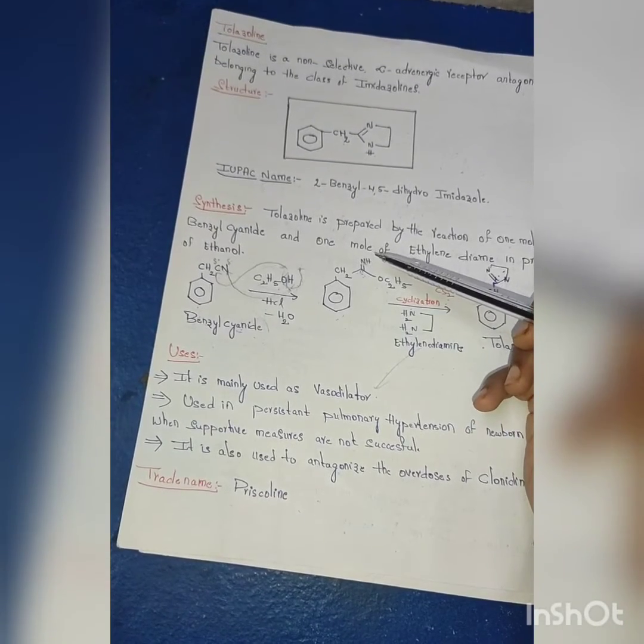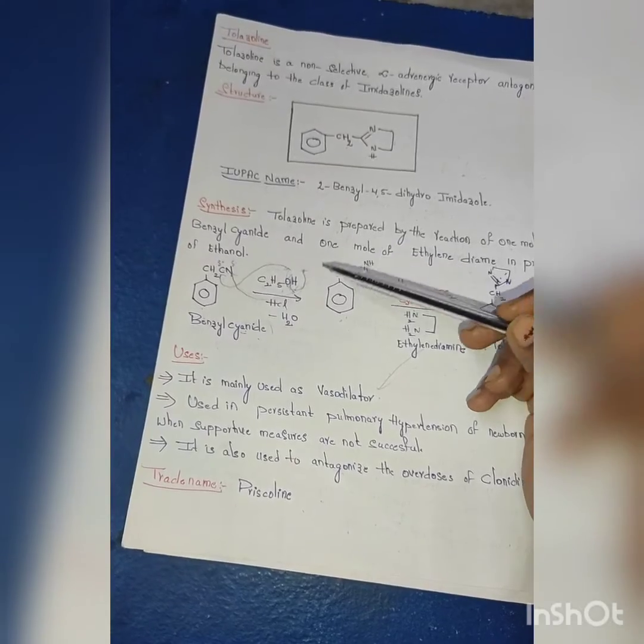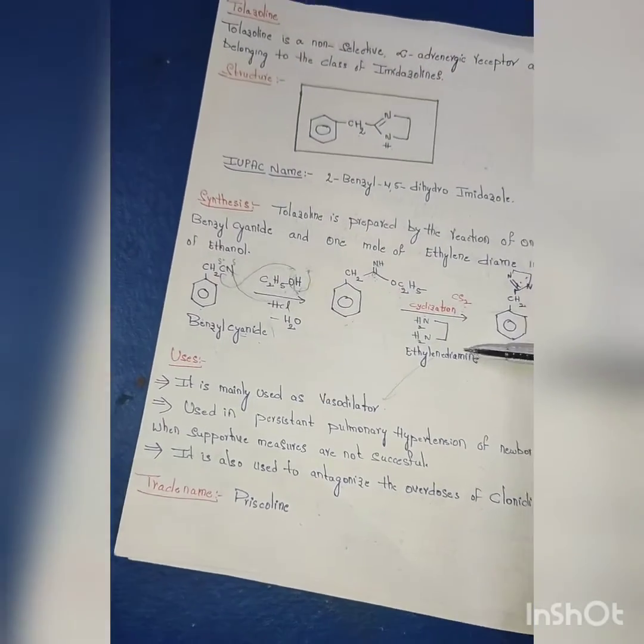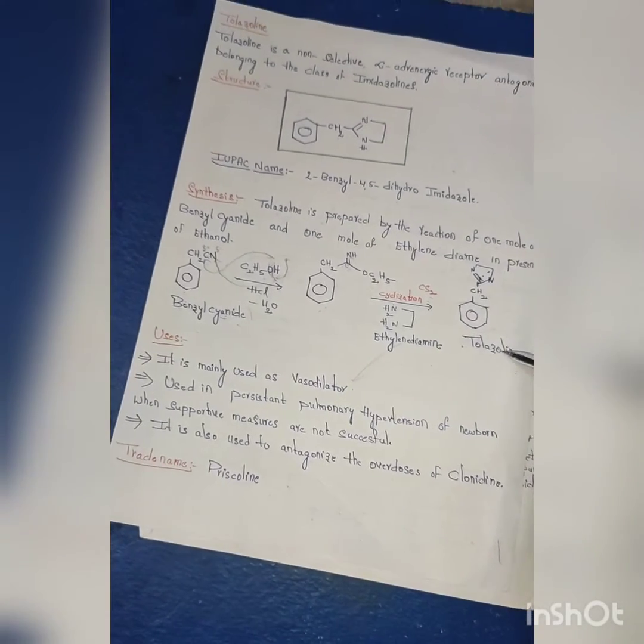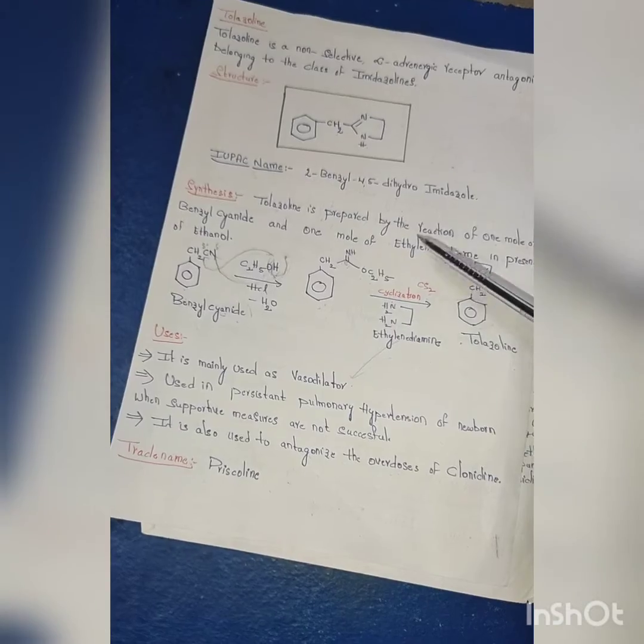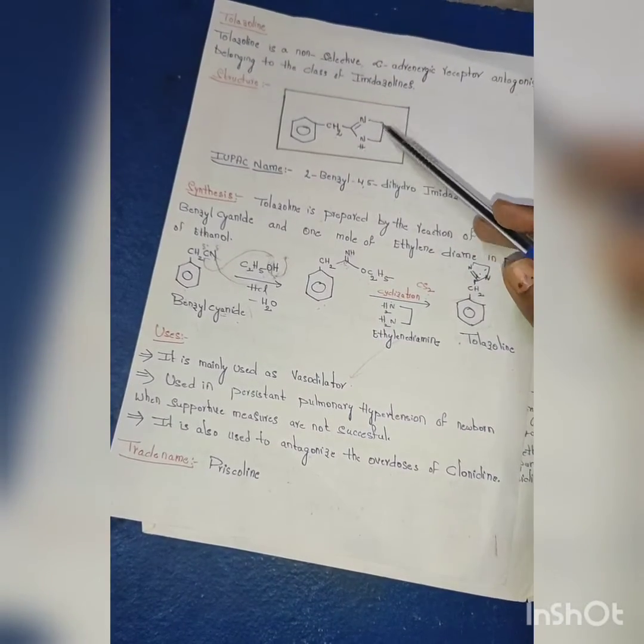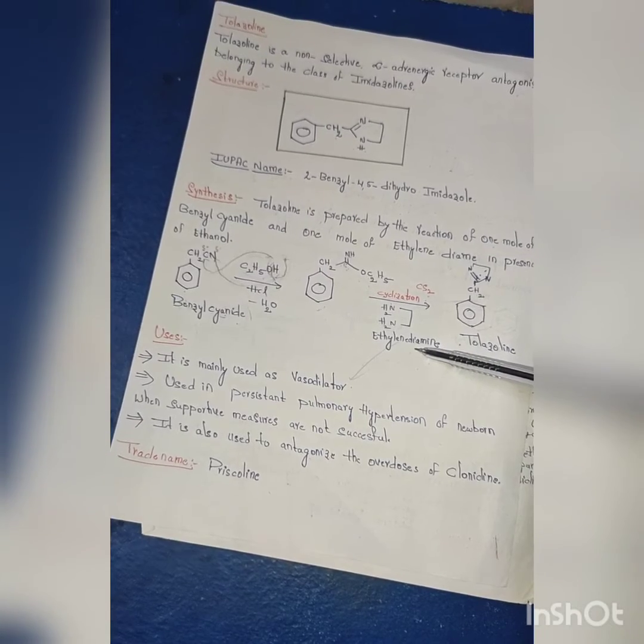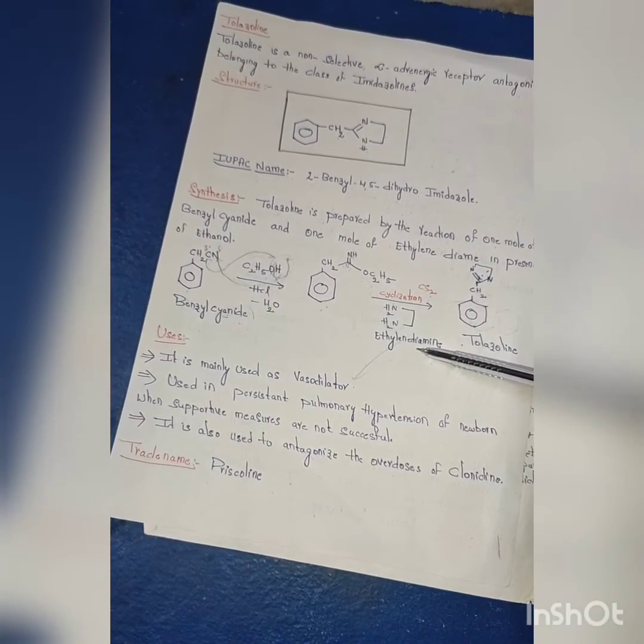Now this intermediate upon cyclization using ethylene diamine, we will get the structure tolazoline. Diamine means two amino groups. In our product structure, there are two nitrogens. That is why we use ethylene diamine, which has two nitrogens. Upon cyclization, we get tolazoline.